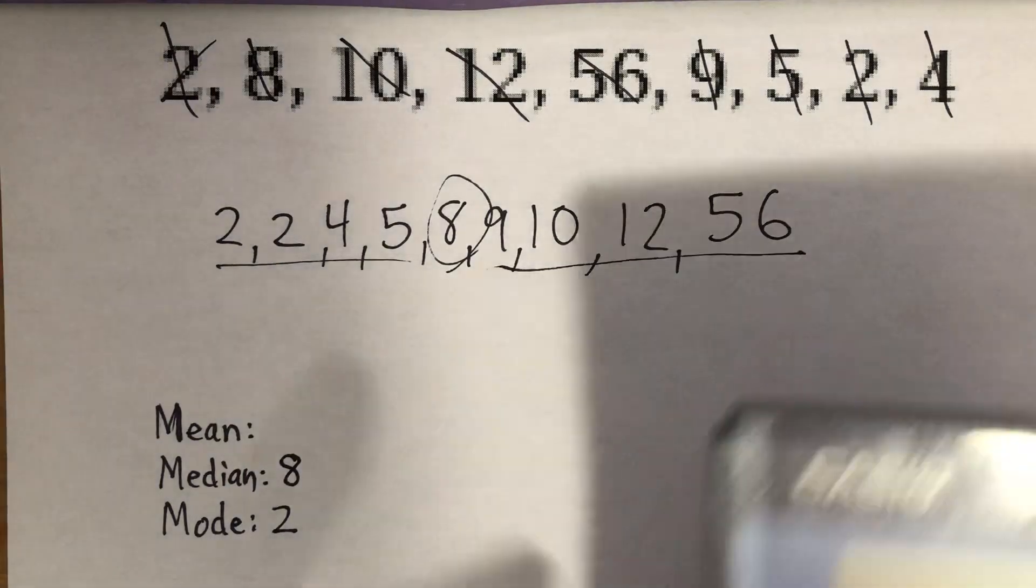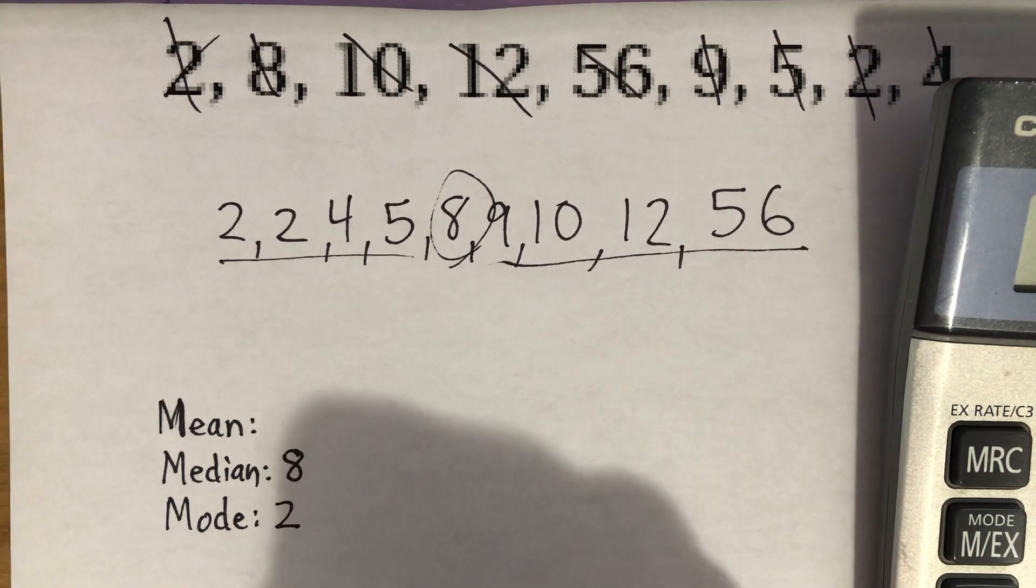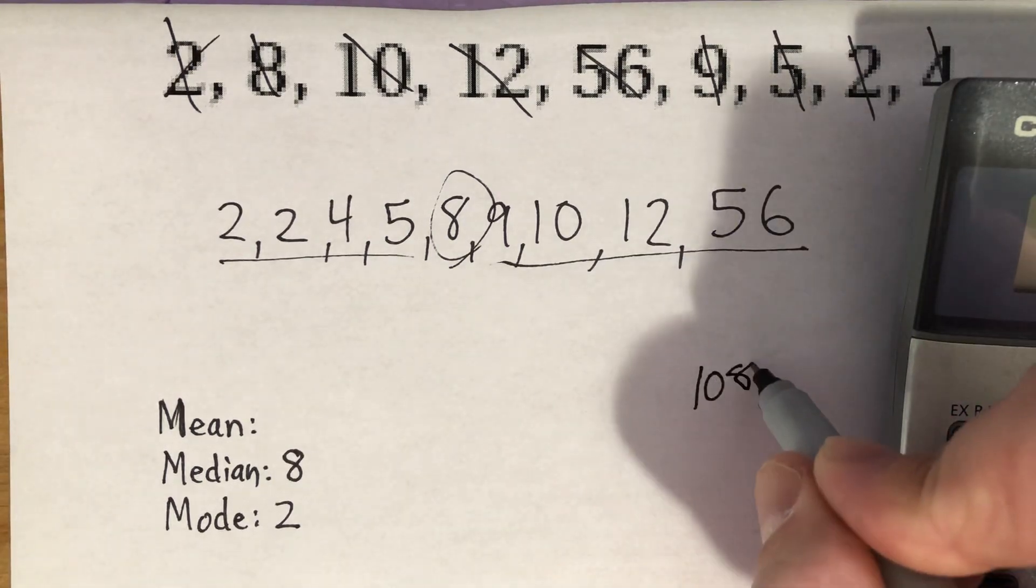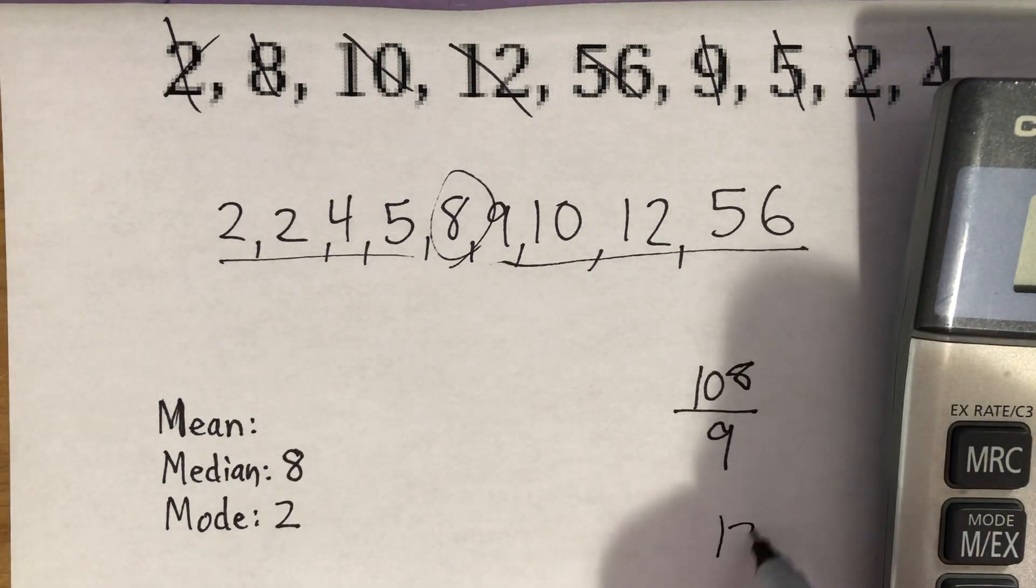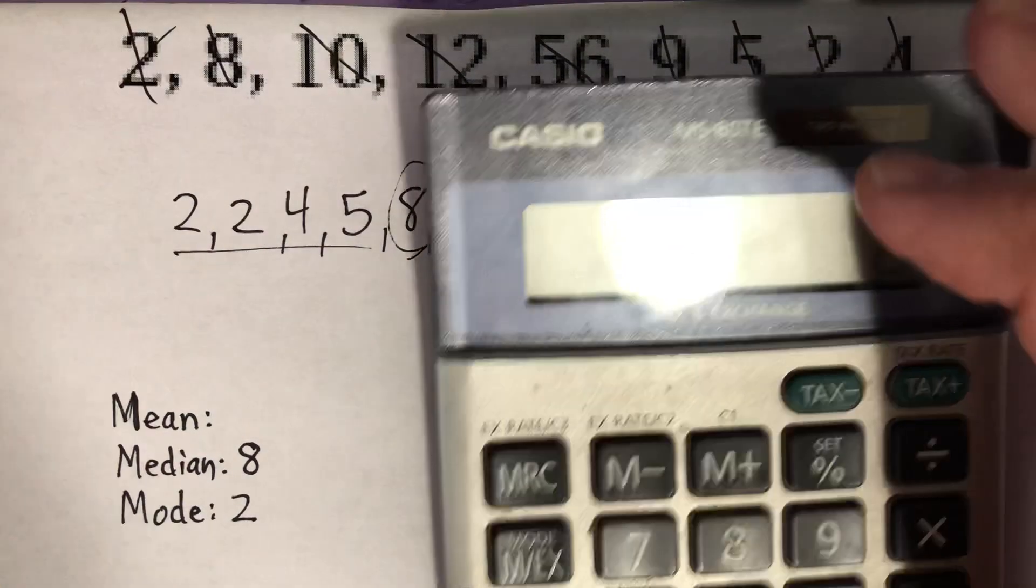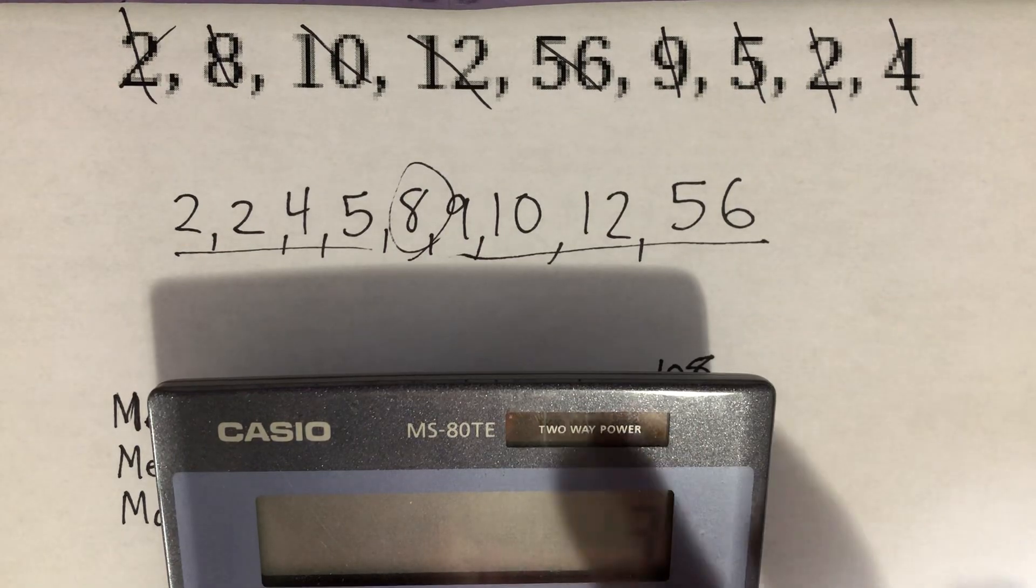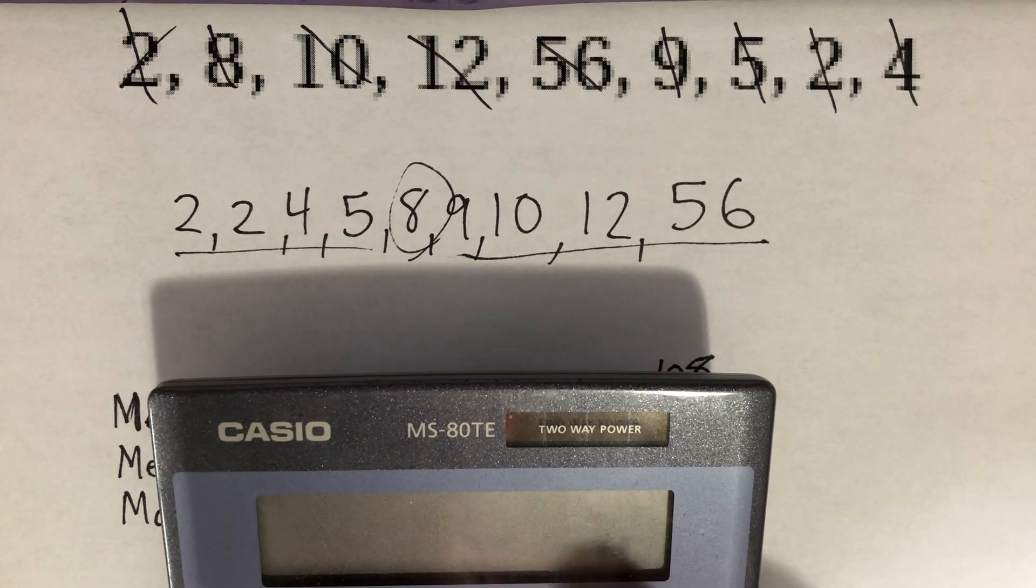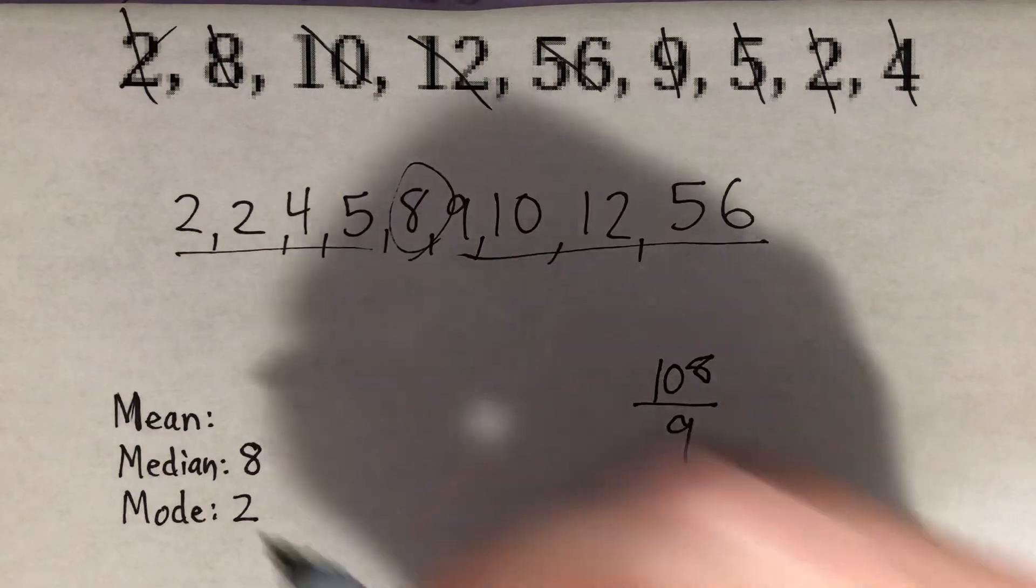Now to find my mean, I'll go ahead and get out that calculator. And I'm going to add these up: 2 plus 2 plus 4 plus 5 plus 8 plus 9 plus 10 plus 12 plus 56 equals 108, which I'm going to write over here, and then I'm going to divide that by nine numbers. And I got 12. Now, let me just make sure that I added that correctly and divided that correctly. So we're going to go ahead right back to that set of numbers, 2 plus 2 plus 4 plus 5 plus 8 plus 9 plus 10 plus 12 plus 56, and then divide that by 9. And sure enough, 12 would be my mean.